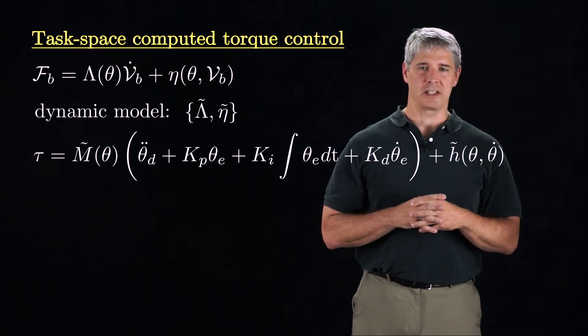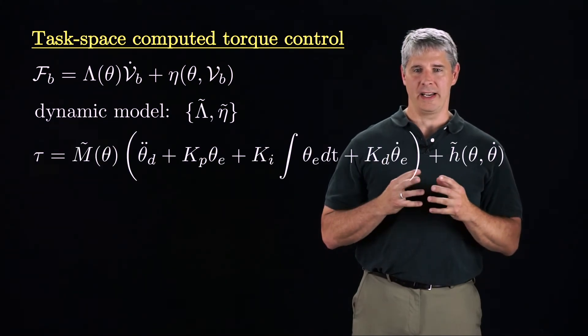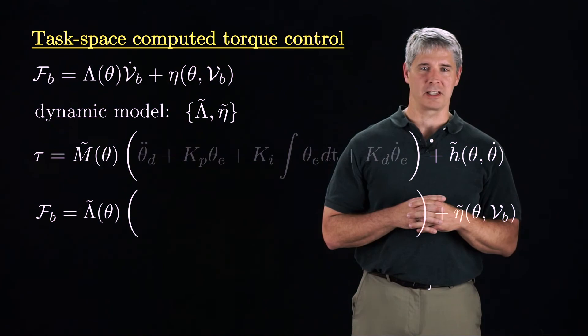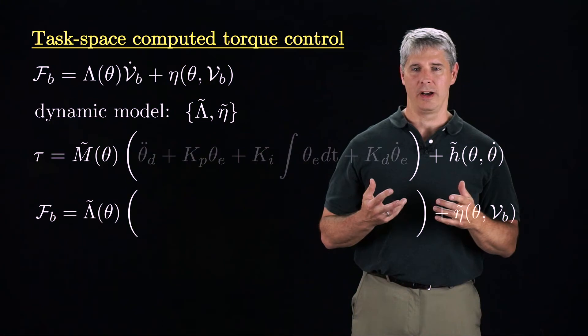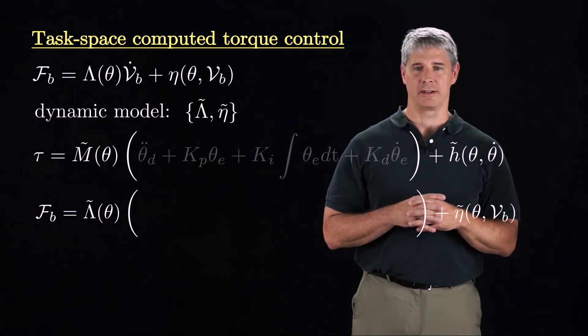Recalling the joint-space computed torque control law, by analogy, rewrite the task-space computed torque control with FB, lambda tilde, and eta tilde, replacing tau, m tilde, and h tilde, respectively.